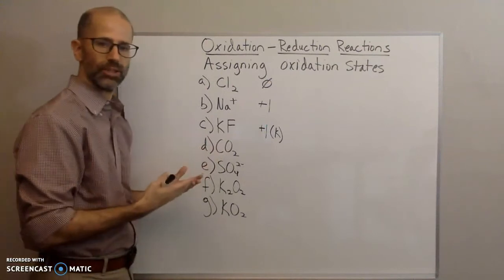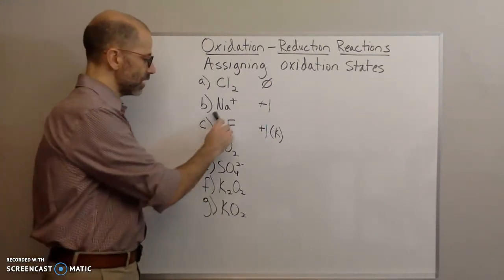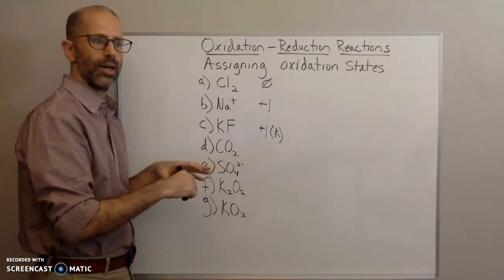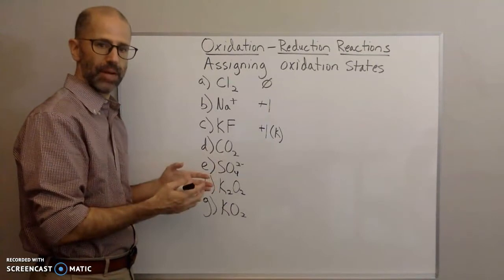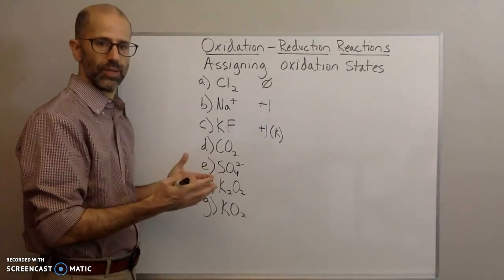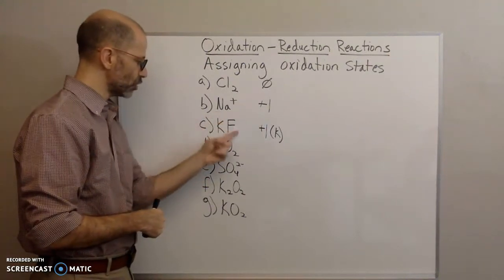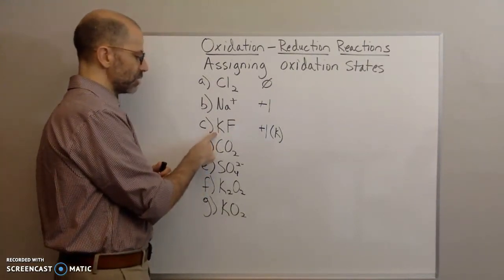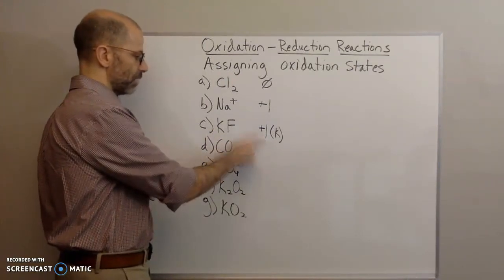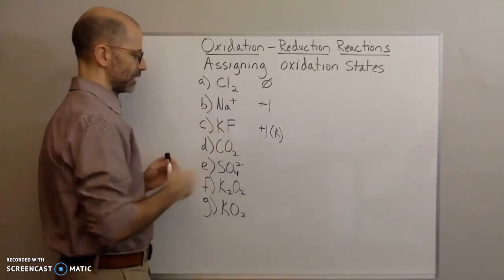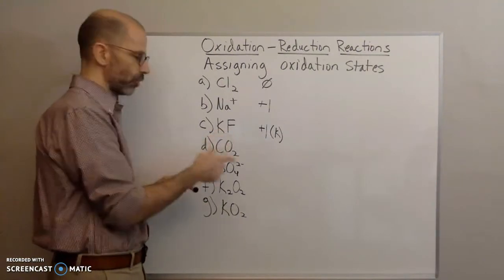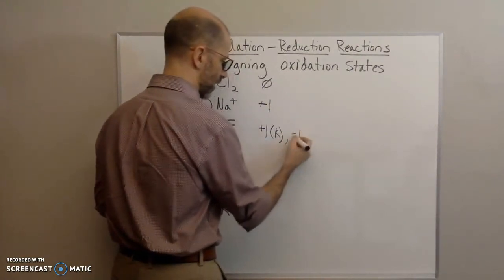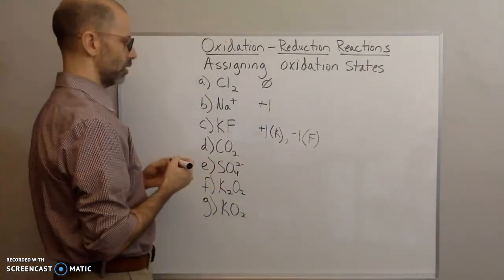Then fluorine gets whatever is left over. Rule number three says the overall sum of oxidation states of the elements in a compound must equal the overall charge of the compound. Since this compound has an overall charge of zero, and potassium has a plus one oxidation state, the fluorine must have a negative one oxidation state to balance it out. So fluorine gets negative one.